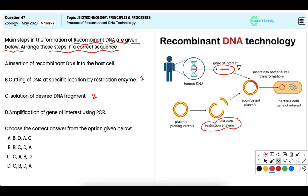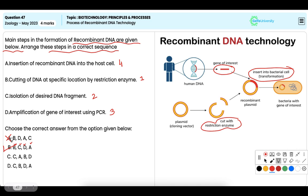Using PCR to make multiple copies, finally the amplified gene is inserted into the host cell. Thus the correct sequence of steps is B, then C, then D, then A. Hence the correct answer is option B. Options A, C, and D are incorrect as these options include an incorrect sequence.